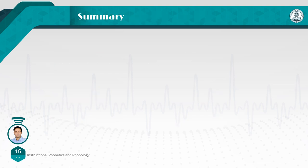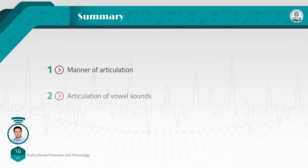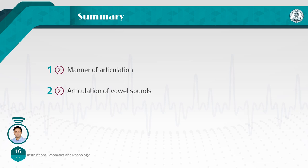So today, first we had a review on different places and manners of articulation. Later, we talked about articulation of vowel sounds and said that we can describe the targets for vowel gestures in terms of three factors: the height of the body of the tongue, the front-back position of the tongue, and the degree of lip rounding. And finally, we talked about suprasegmentals — features superimposed on the syllables — including variations in stress, pitch, and intonation. This is the end of the fourth session. Goodbye, everybody.